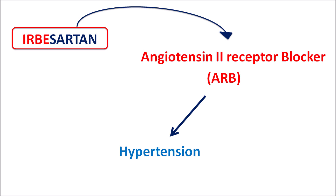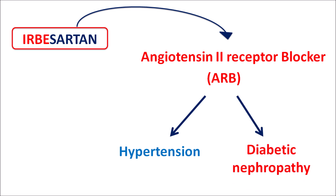It can be used either as monotherapy or in combination. This drug can also reduce nephropathy developed in type 2 diabetic patients. In both of these conditions, Irbesartan can reduce the renin-angiotensin system, thereby reducing blood pressure as well as the nephropathy developed in type 2 diabetic patients.